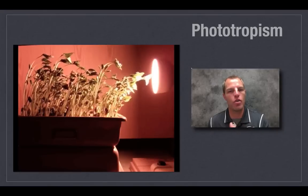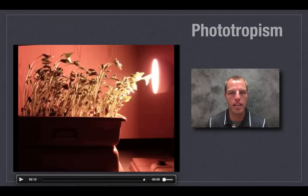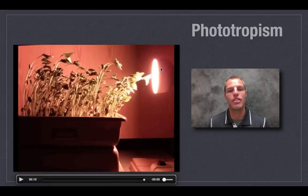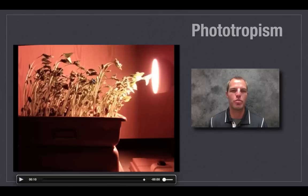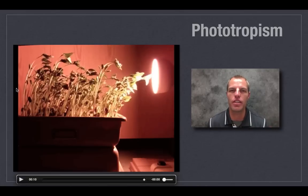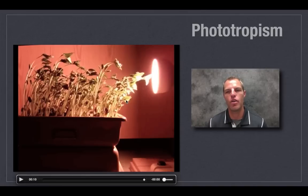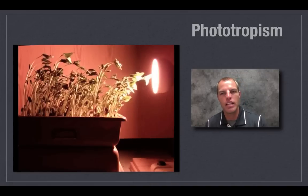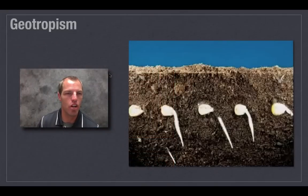This is a positive phototropism — you can see how they're bending their stems just to get more light for their leaves. If we moved the light over to the left, these plants would shift and start bending that way towards the light. So phototropism is turning towards the light.